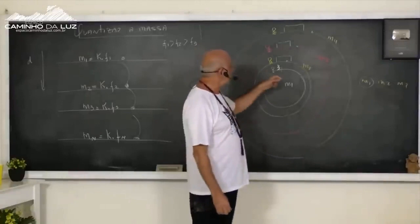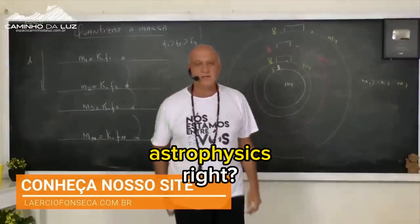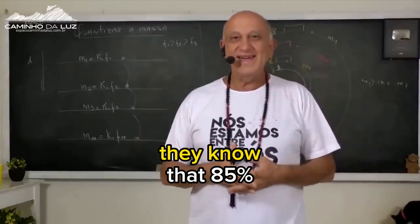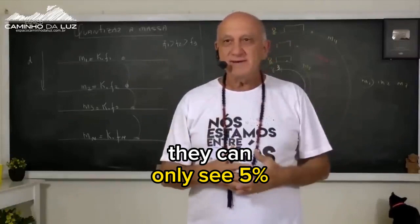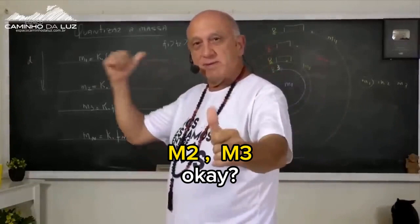So we only detect matter M1 with our telescopes, our equipment in astrophysics. But physicists are having problems because when they measure the mass of the galaxy, they know that 85%, 95% of the galaxy's mass is unaccounted for. They can only see 5%, which is matter M1. These 95% of matter are in M1, M2, M3.